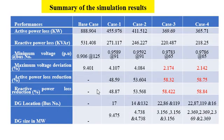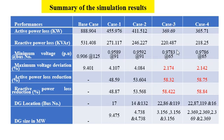Here is the summary table of simulation results. Performance metrics include active power loss, reactive power loss, minimum voltage, maximum voltage deviation, and DG location and size. Results are compared across the base case and cases 1 through 4, corresponding to 1DG, 2DG, 3DG, and 4DG configurations.